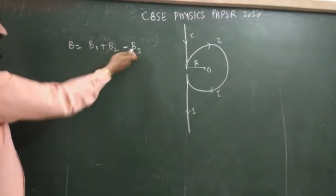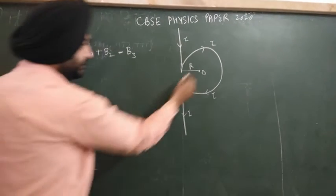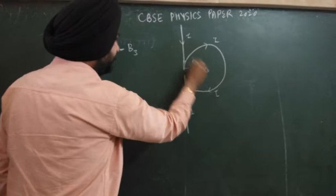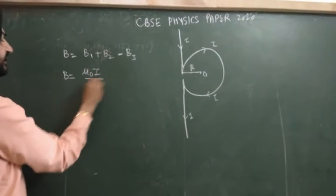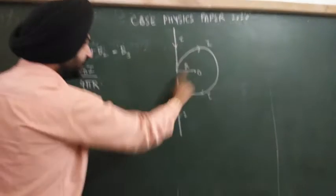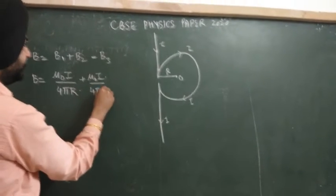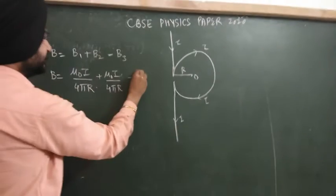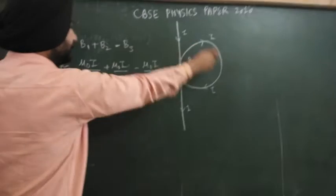Similarly, this is a magnetic field. We will call it μ₀i divided by 4πr minus μ₀i upon 2r. That is due to circular coil.